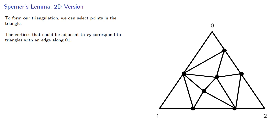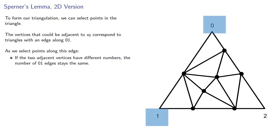So imagine we select points along this edge and label them as we go. If the two adjacent vertices have different numbers, then regardless of how we label the new point, the number of 01 edges stays the same. Meanwhile, if the adjacent vertices have the same number, the number of 01 edges stays the same, or it increases by 2.